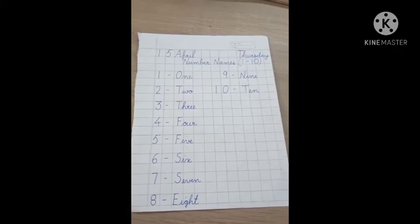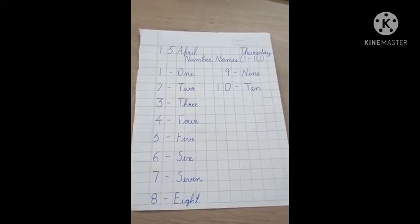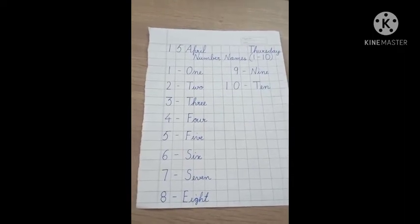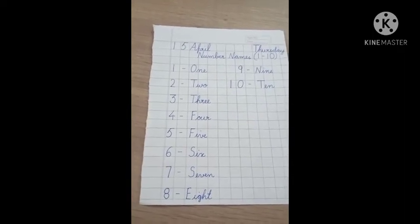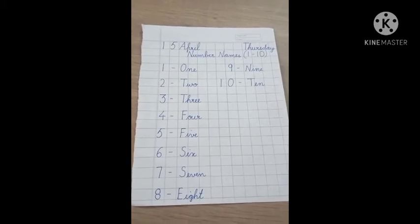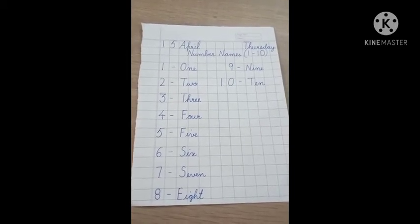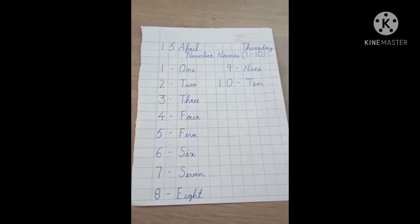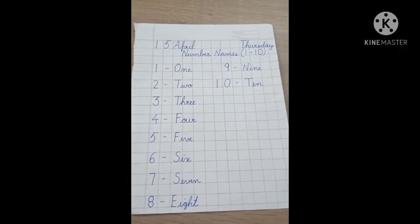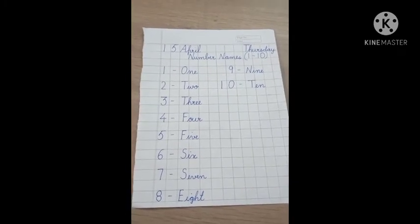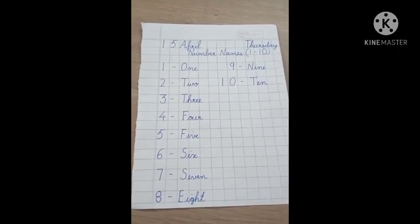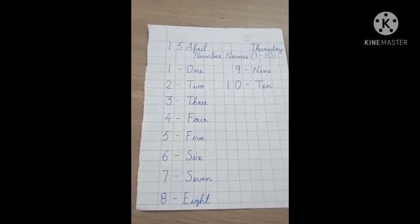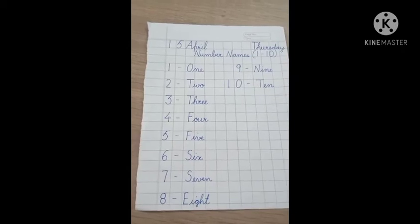So like this, numbers also have names. 2 ki spelling T-W-O, 3 ki spelling T-H-R-E-E, 4 ki spelling F-O-U-R, 5 ki spelling F-I-V-E, 6 ki spelling S-I-X, 7 ki spelling S-E-V-E-N, 8 ki spelling E-I-G-H-T, 9 ki spelling N-I-N-E, or 10 ki spelling T-E-N. So, every number has a different spelling because every number is different.